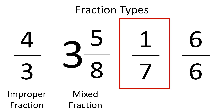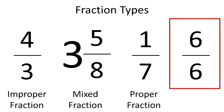The third fraction has a numerator smaller than the denominator, so this is a proper fraction. The last fraction has the numerator and the denominator equal, so this is an improper fraction.